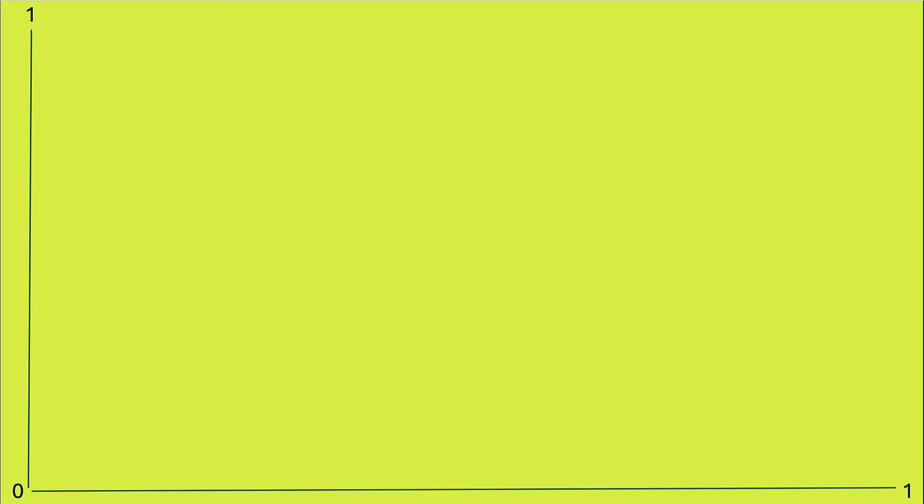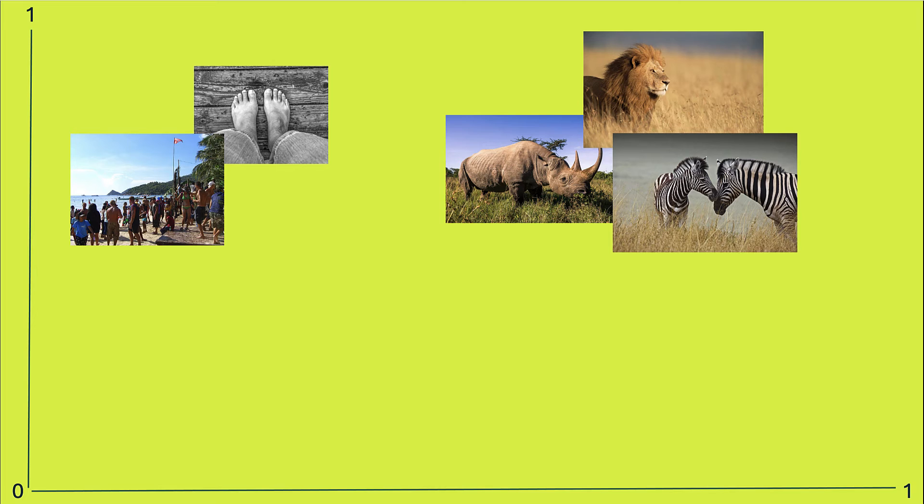So to simplify that, imagine you'd laid out your holiday photos from your trip to Africa on the table and you wanted to put photos which are similar together. So you'd have the animal photos over there from the safari. And we'd have that artistic photo of the concert on the beach. And there's that picture of my feet that I took. We'll put that over there.